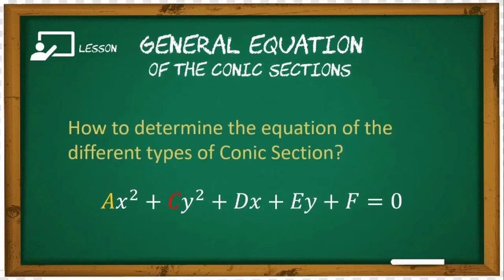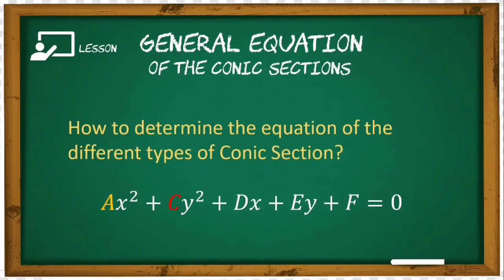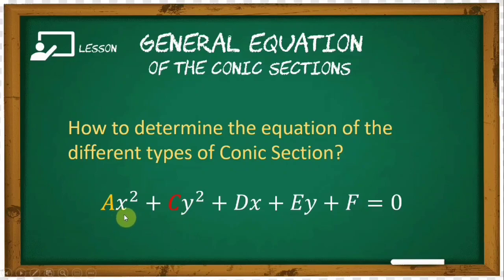The question is: how do we determine the equation of the different types of conic sections? The general equation is ax² + cy² + dx + ey + f = 0. What we need to remember is the value of a and c — that is, the numerical coefficients of x² and y² respectively.